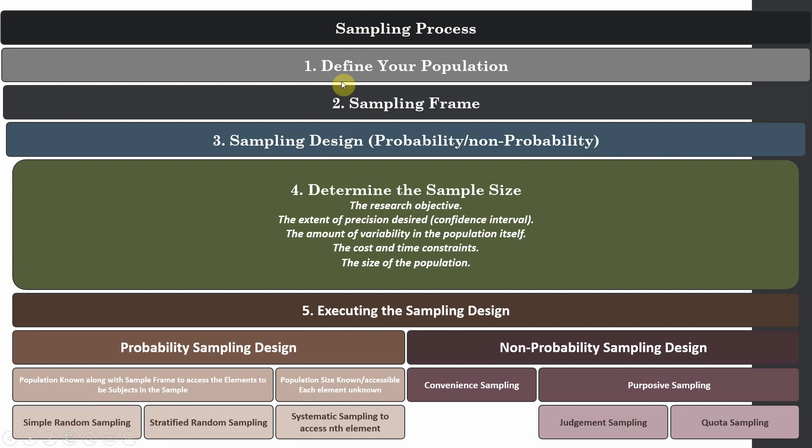Moving on. I've got this framework here. The stepwise process. You define your population. Second, you define or draw your sample frame. Third, you establish or try to find which sampling design is suitable for your study. And four, you consider your sample size considerations. And finally you execute your sample size based on the conditions of your study and based on the access that you have to the elements in the population. I hope this video would have clarified the sampling process.